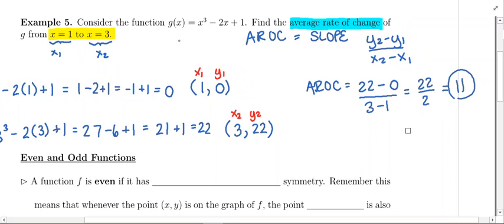If you're trying to understand what this means visually, if you were to graph out this function g of x and you looked at the points, the ordered pairs 1, 0 on the graph and 3, 22 on the graph, if you took those two points on your curve and you drew a line between those two points, the slope of that line is going to be 11.